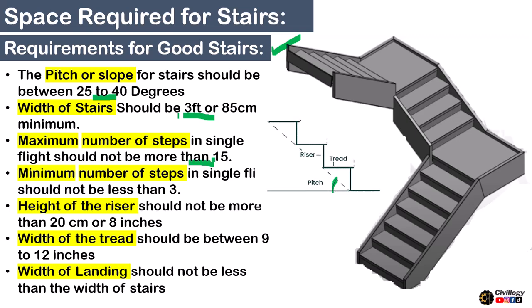A flight is a number of steps in a single row. As you can see here, there are three number of flights: flight number 1, flight number 2, and flight number 3. There are also two number of landings — the flat portion of stair between two series of steps is called a landing. So in this staircase, there are three flights and two landings.